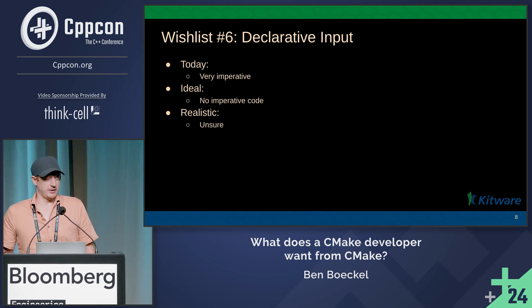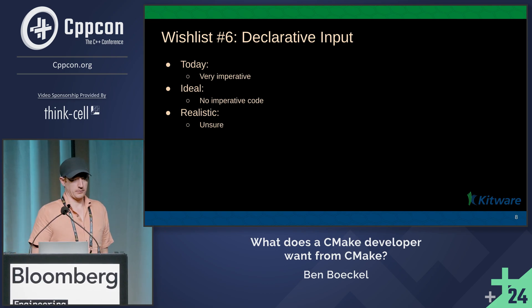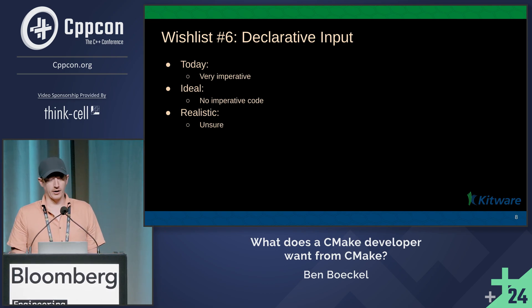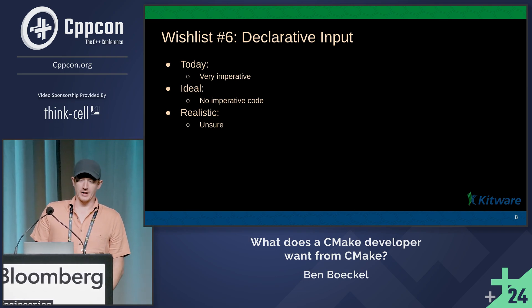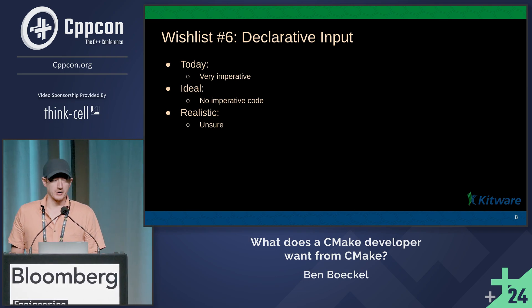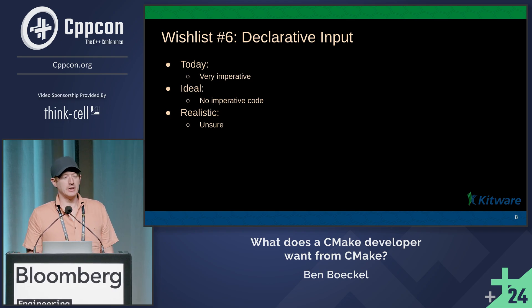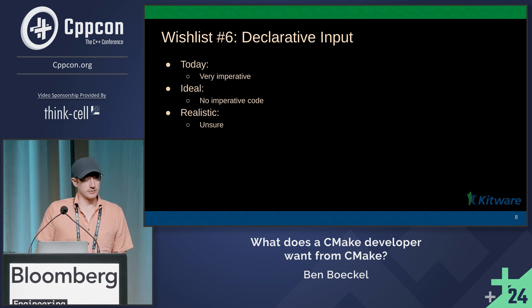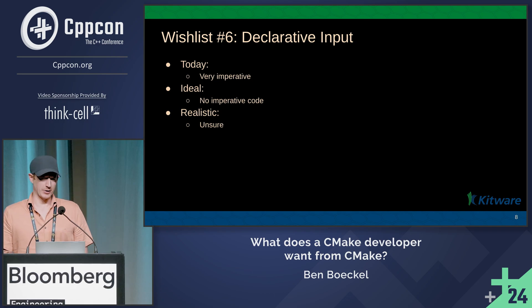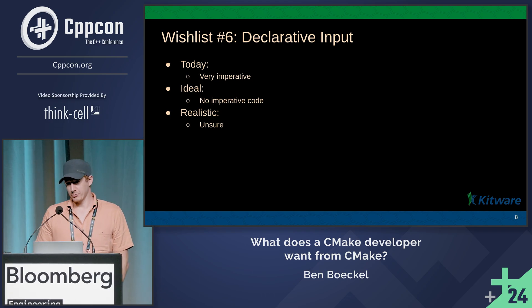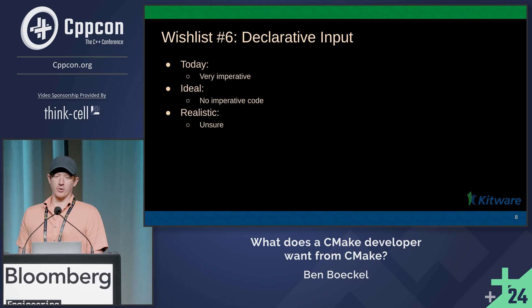And lastly, declarative input. Today we're very imperative. There's not really any way to even do expressions in CMake unless you're in an if statement. Ideally we'd have no imperative code, but I don't think that's really possible. But I have ideas on this. People have asked me and I call it my 10-year plan. They ask me from when that 10-year plan starts, and I say: whenever we get to start working on it. Thank you.